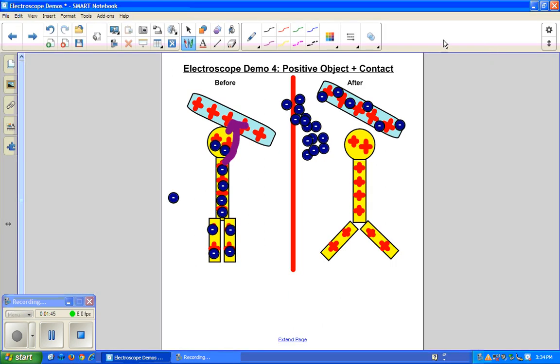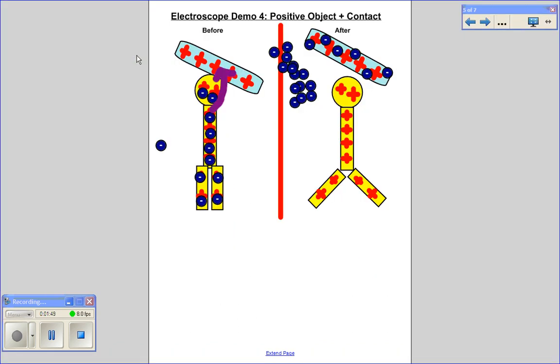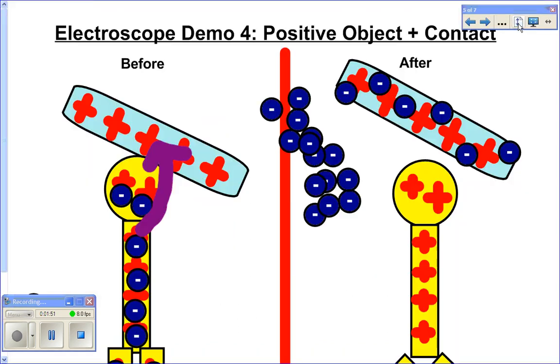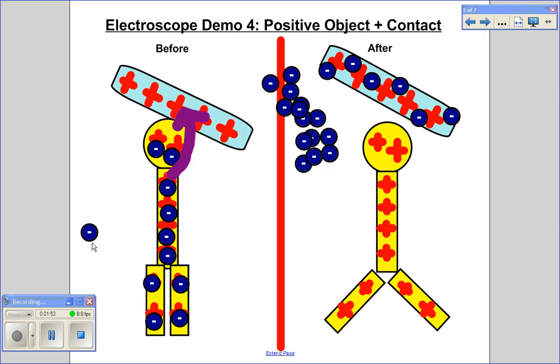Let me get out of this screen here and go back to my drawing tool. Or not to my drawing tool, just get away from the drawing tool. And so what you want to show is that the electrons that are on the neutral electroscope now are going to move, they're going to want to move on my arrow.